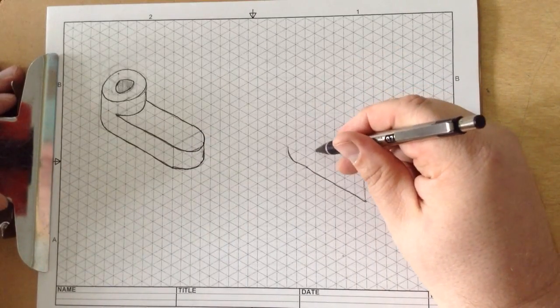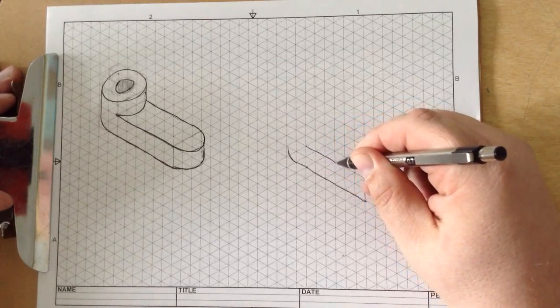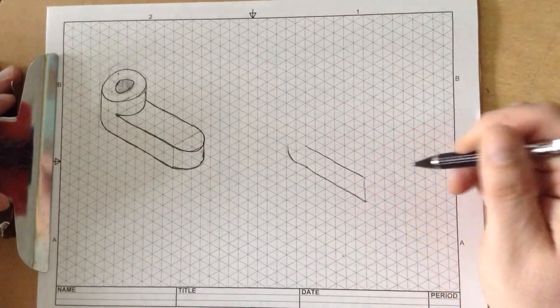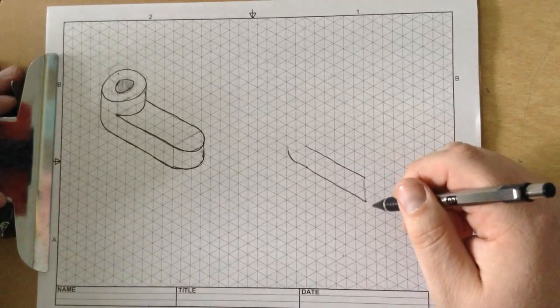So 1, 2, 3, 4, 5, 6 right there. And I'm going to connect the line. So again, this is just a very light construction line right there.